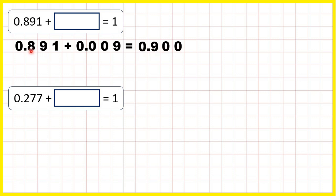just as 891 plus 9 is 900. Now we don't need zeros on the end of decimals, but from 0.9, if we add 0.1,